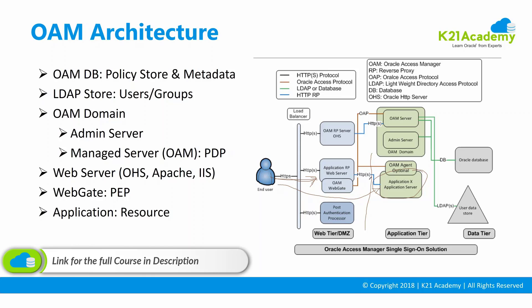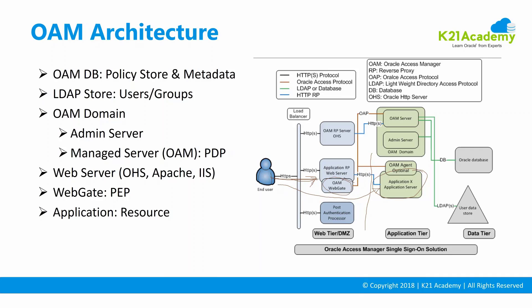The web server has a module like mod_wl for WebLogic or mod_wlohs for other application servers. When the user tries to access the application through the web server, WebGate kicks in and says you need to first log in. WebGate takes the user to Oracle Access Manager through the back-end channel. Oracle Access Manager connects to its database to check how the policies protect that URL, then redirects the user through the web server to a login page with a user ID and password field.